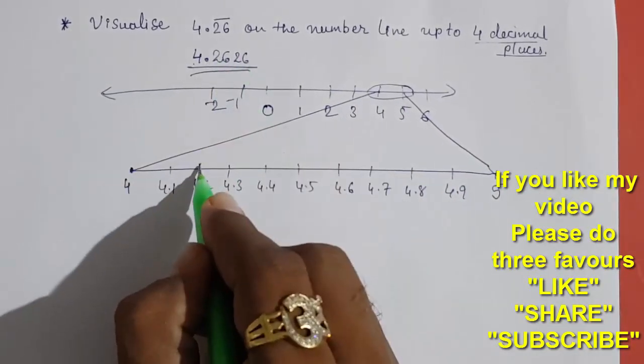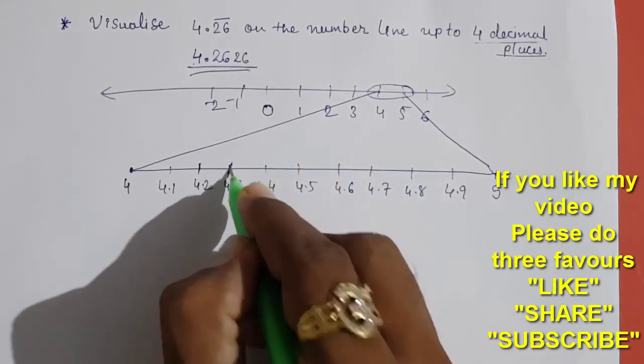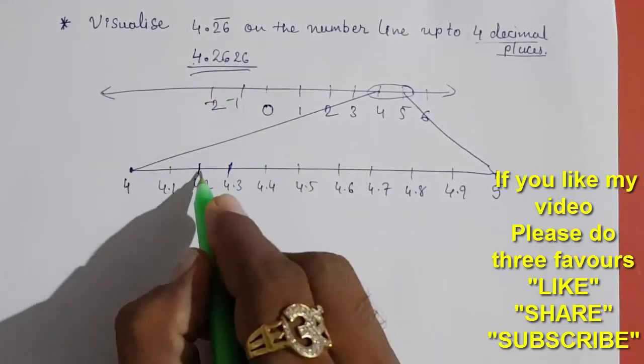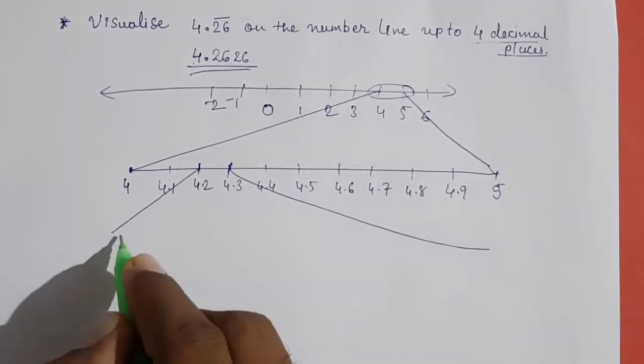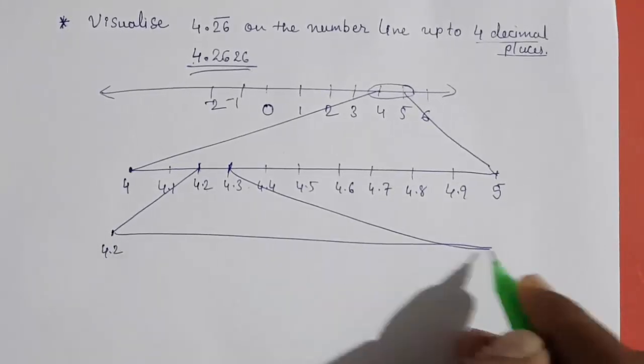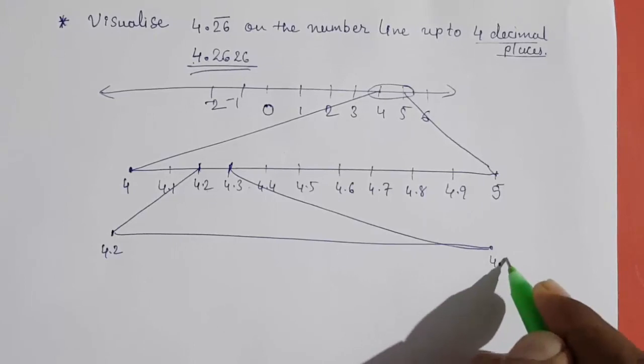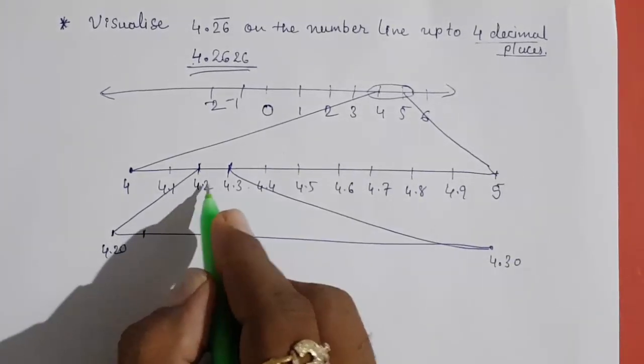So 26 is between 20 and 30, so again we have to magnify this. This will be 4.30 and this is 4.20. Between that, 4.2 means 20.